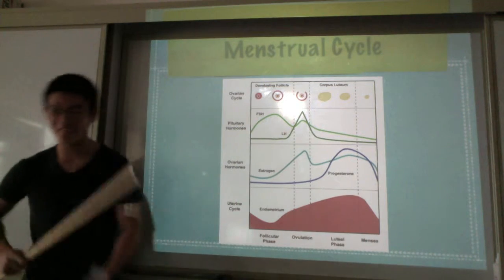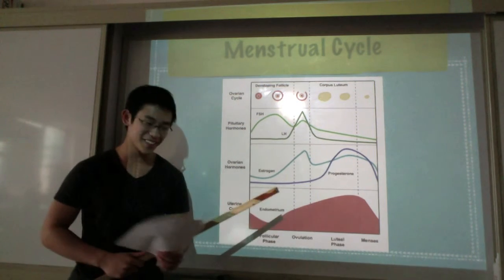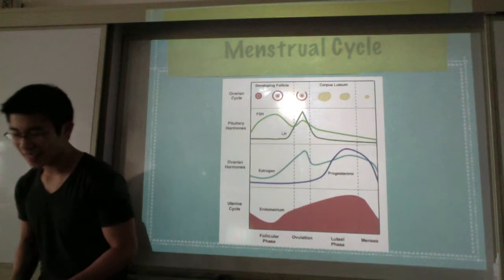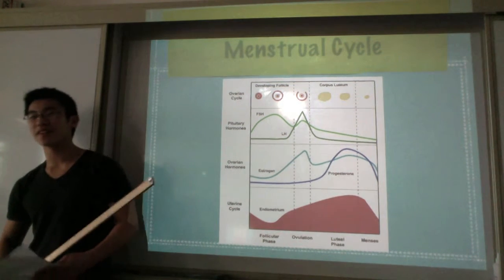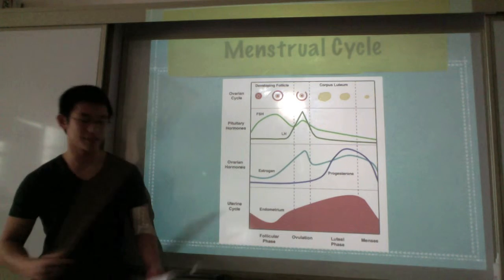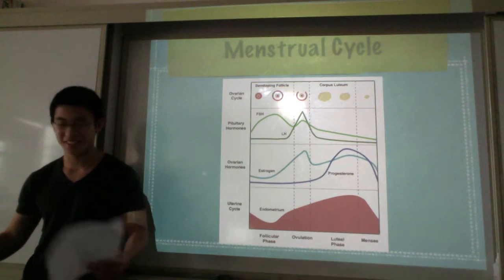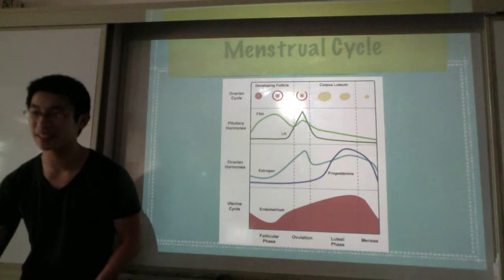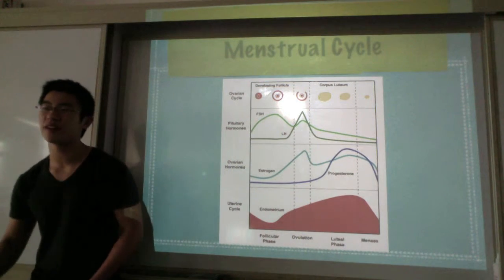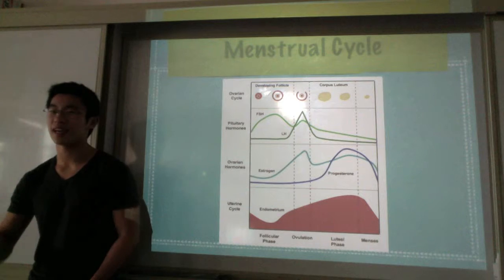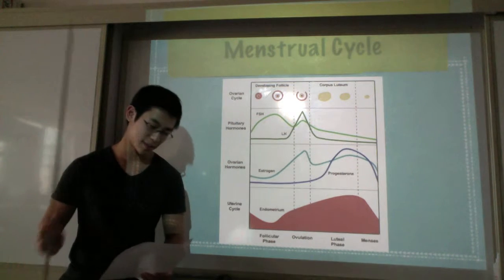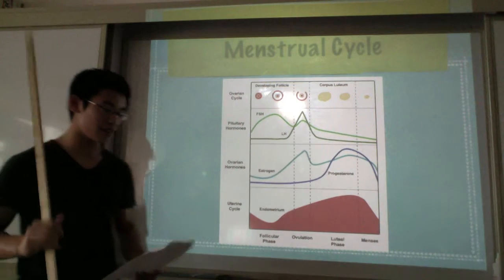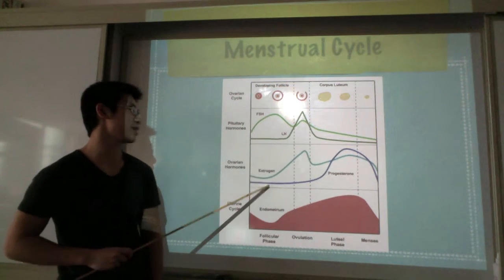So there's four phases. The first phase is the follicular phase, and this is when FSH stimulates the growth of several follicles. It's easy to remember this because follicle-stimulating hormone stimulates the growth of several follicles. And then when there's one dominant follicle, it secretes estrogen, because it doesn't want other follicles to start growing — like, "I'm alive, you guys don't get to be alive."